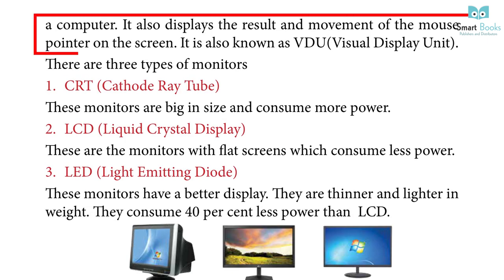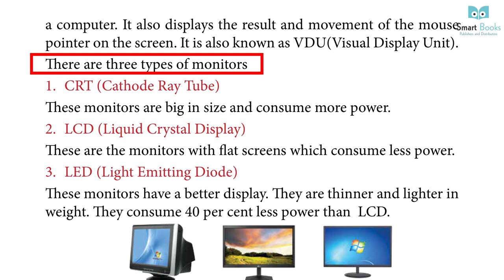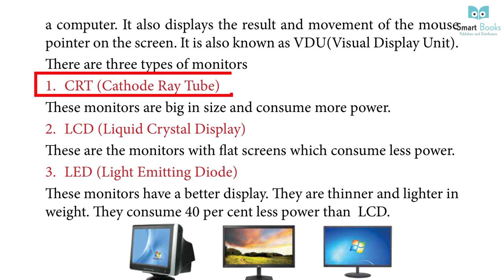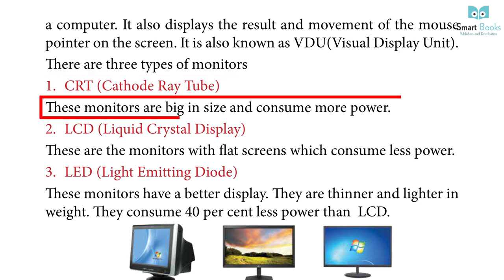Output Devices. Monitor: A monitor is an output device that shows the work we do on a computer. It also displays the result and movement of the mouse pointer on the screen. It is also known as VDU — Visual Display Unit. There are three types of monitors: 1. CRT — Cathode Ray Tube: These monitors are big in size and consume more power.